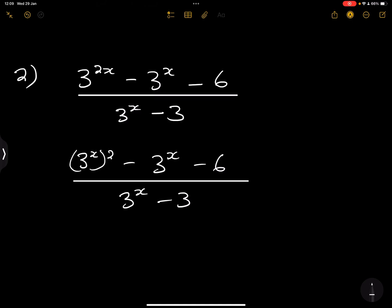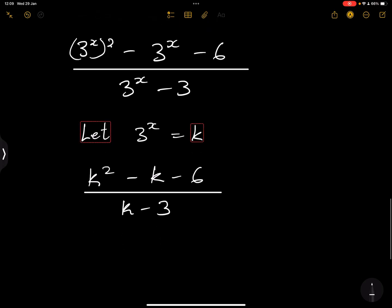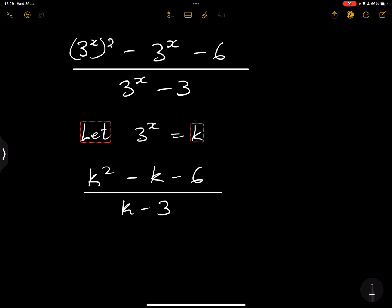So what we can do is we can write that 3^x squared minus 3 to the exponent of x minus 6 divided by 3 to the power of x minus 3. So that gives us K squared minus, oh in fact I forgot to say, let's let 3 to the power x equal to K.